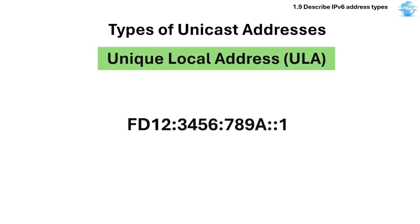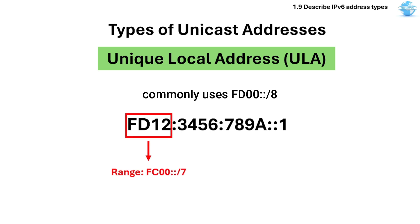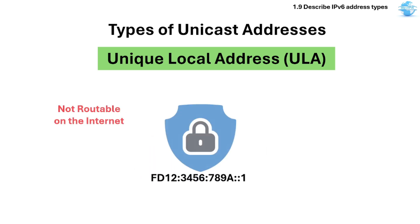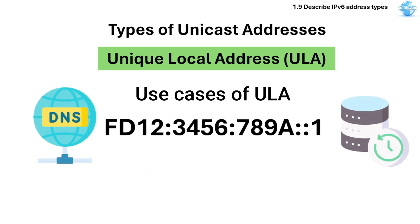Another type of Unicast is the Unique Local address. The range is FC00/7, and it commonly uses FD00/8. Its purpose is for private addressing within an organization. This is not routable on the internet, and is mostly used in home labs or internal services like DNS or backups.